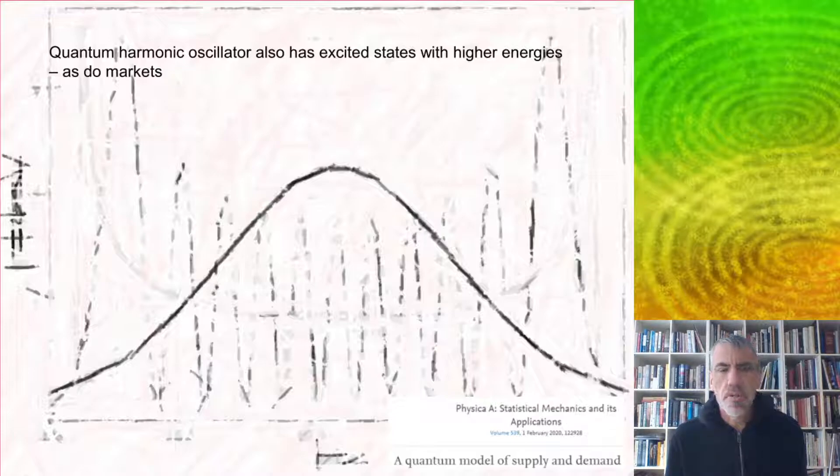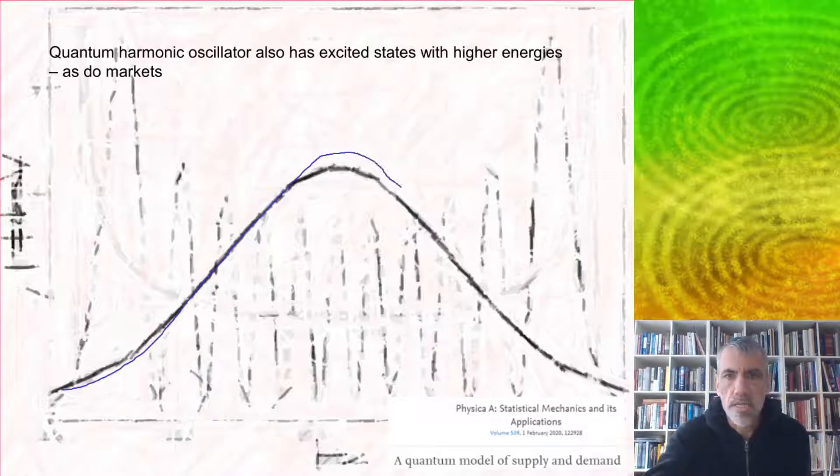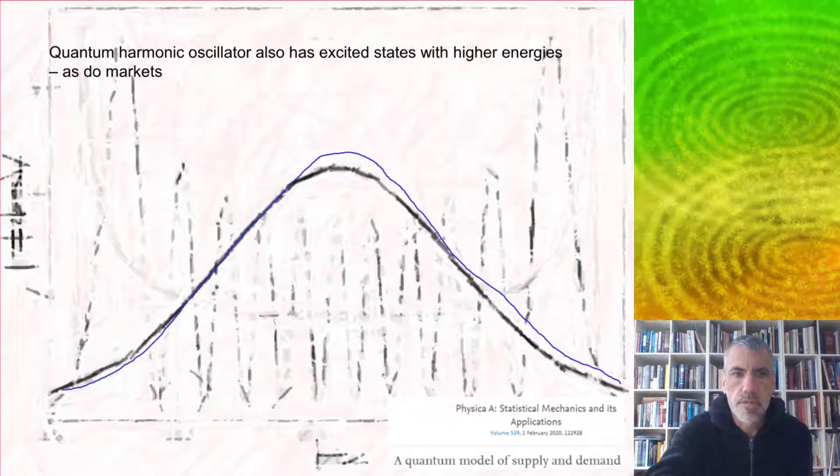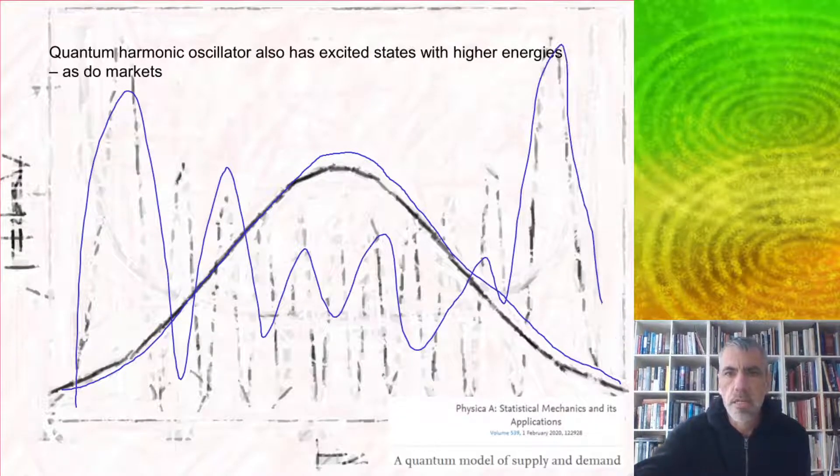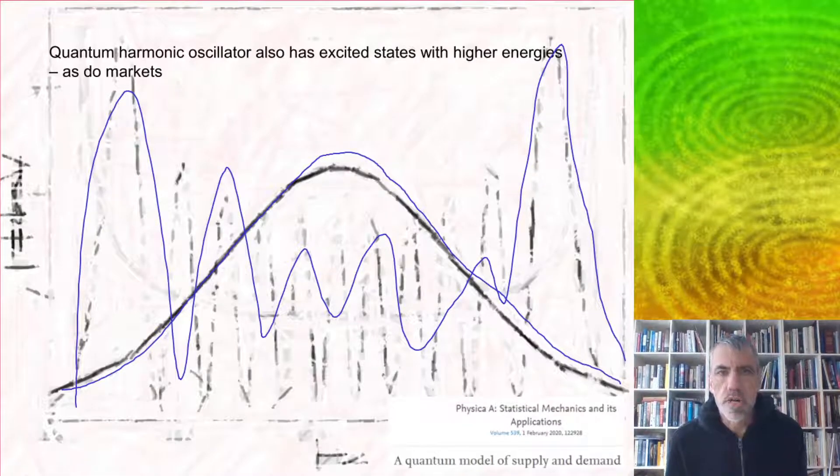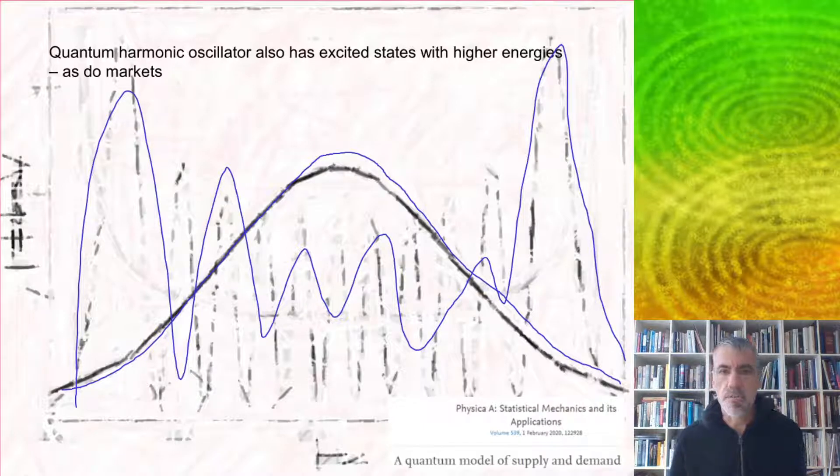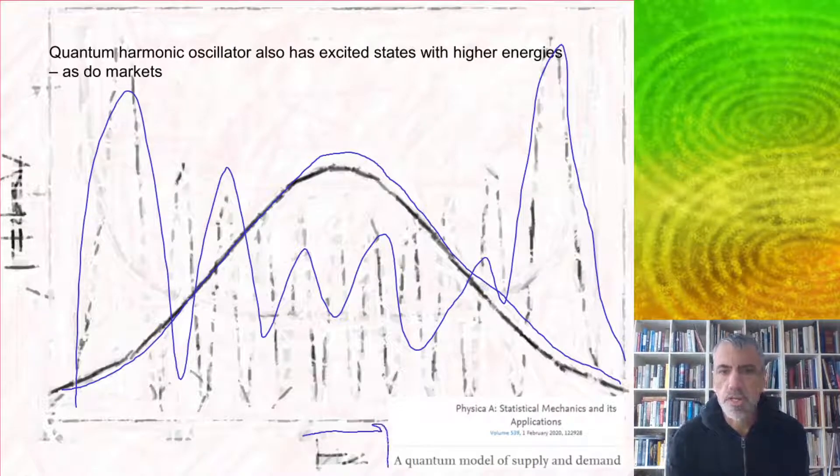The quantum harmonic oscillator has excited states with higher energies. The ground state is this normal curve, which is a bit reminiscent of the quantum walk. The higher states are not going to be used too much, but just by using the ground state and a couple of the next higher energy states, we find that it's possible to fit things like asset price fluctuations in stock markets very well. The details are in this paper, a quantum model of supply and demand.